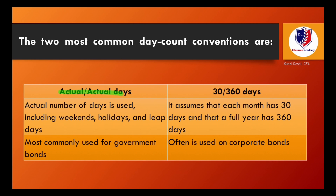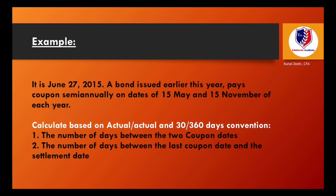The two most common day count conventions are actual over actual and 30 over 360. Actual over actual includes weekends, holidays, and all days in the year, and is most commonly used for government bonds. On the other hand, 30 over 360 assumes that each month has only 30 days, summing to 360 days in a year, and is especially used for corporate bonds.